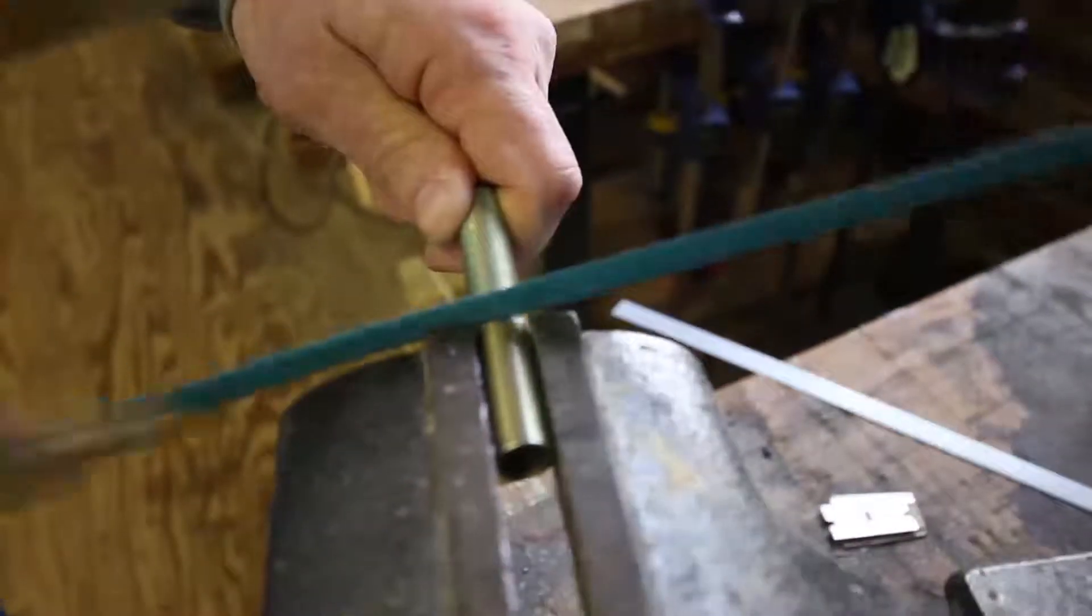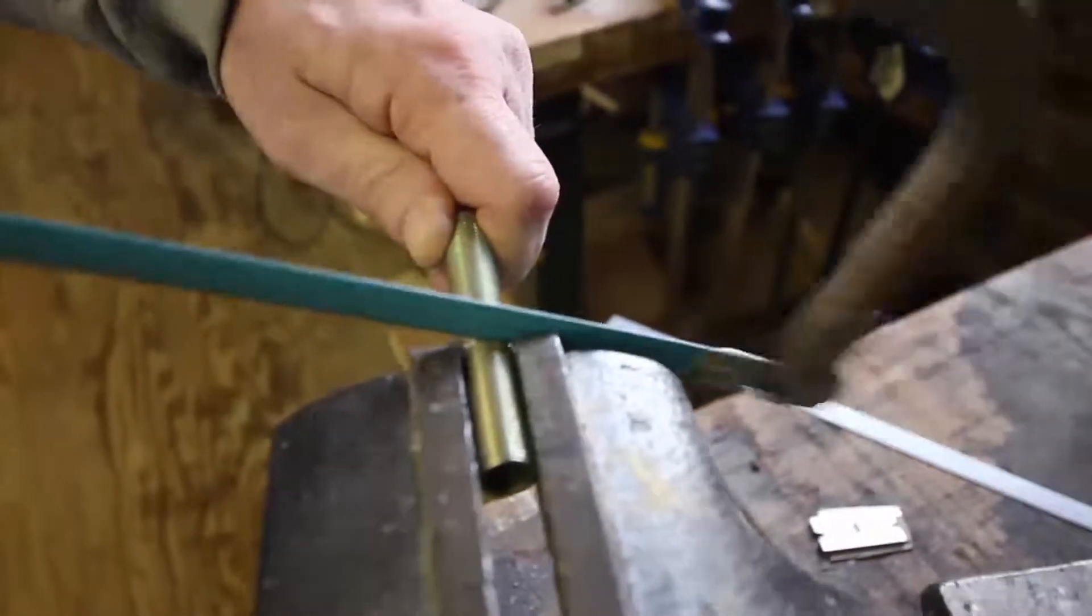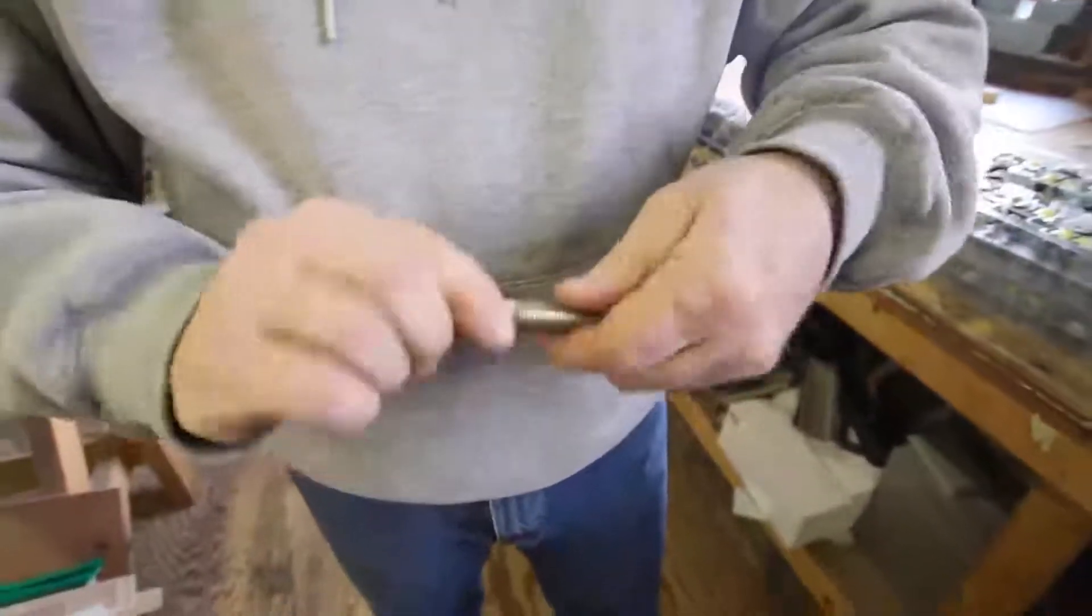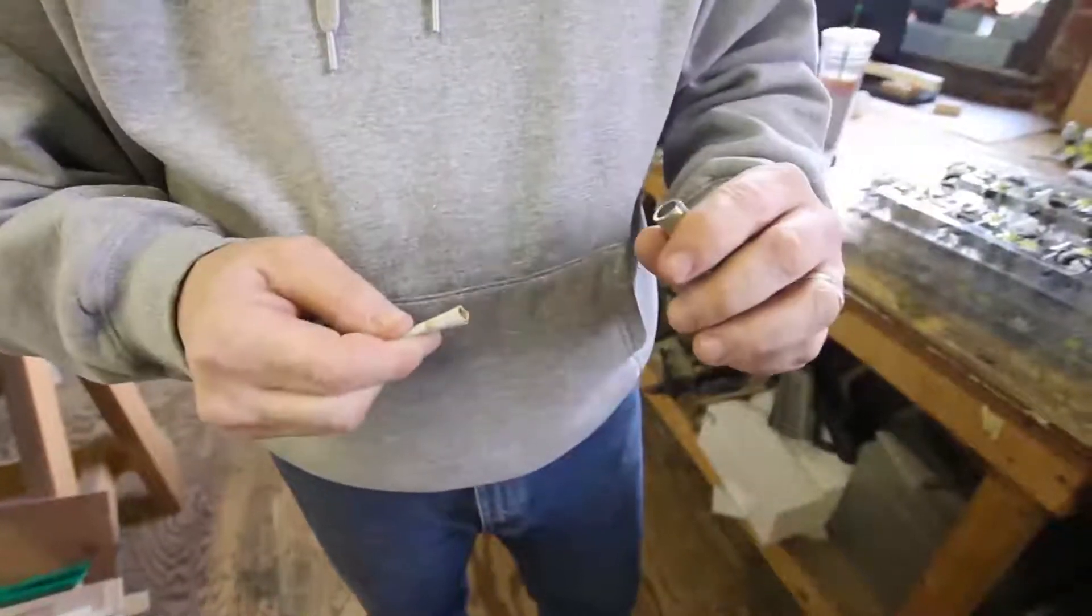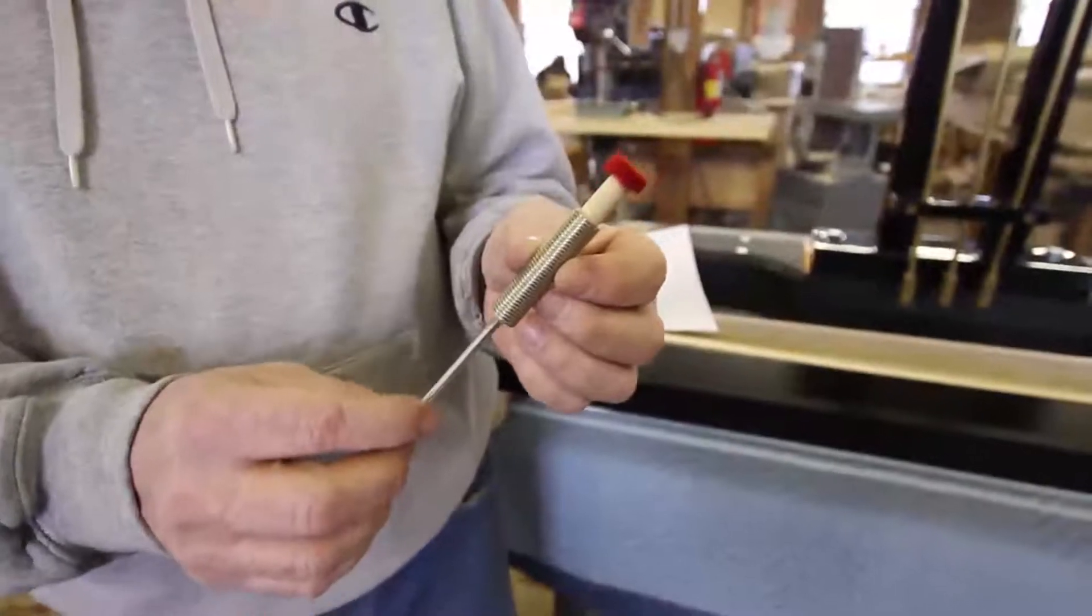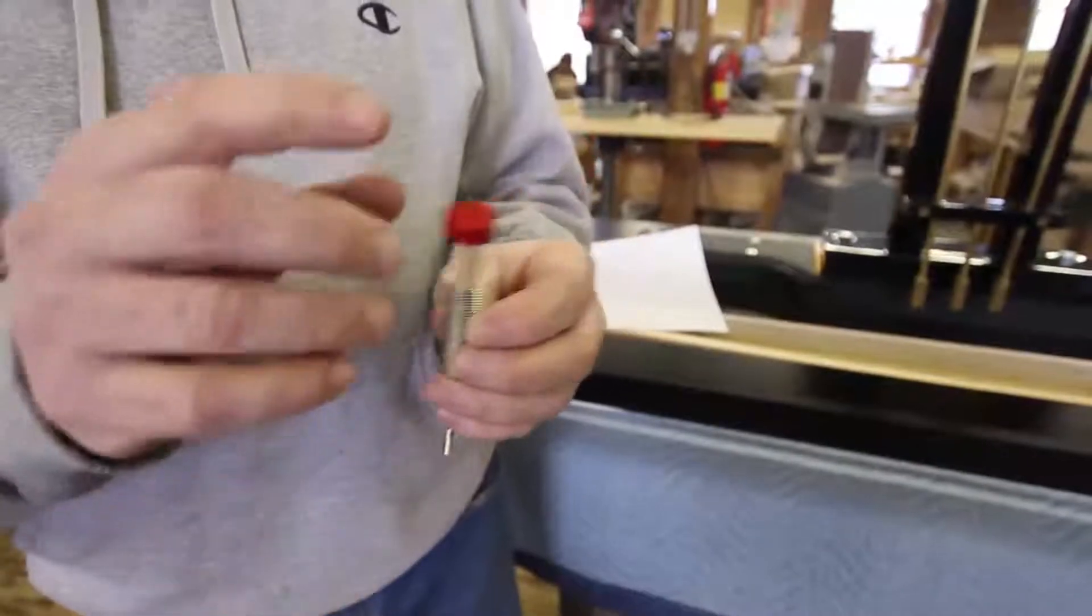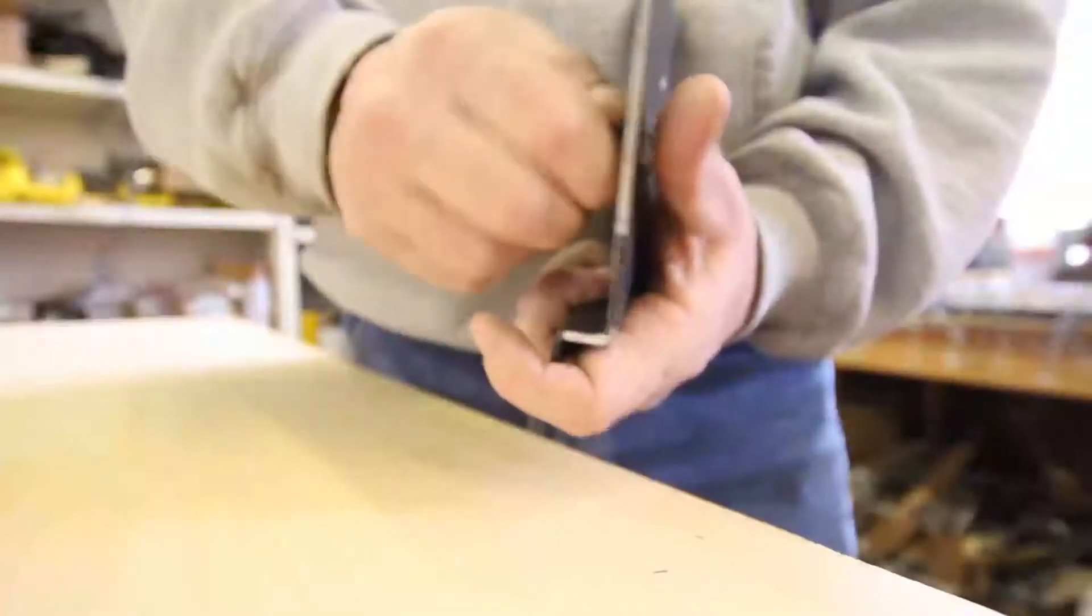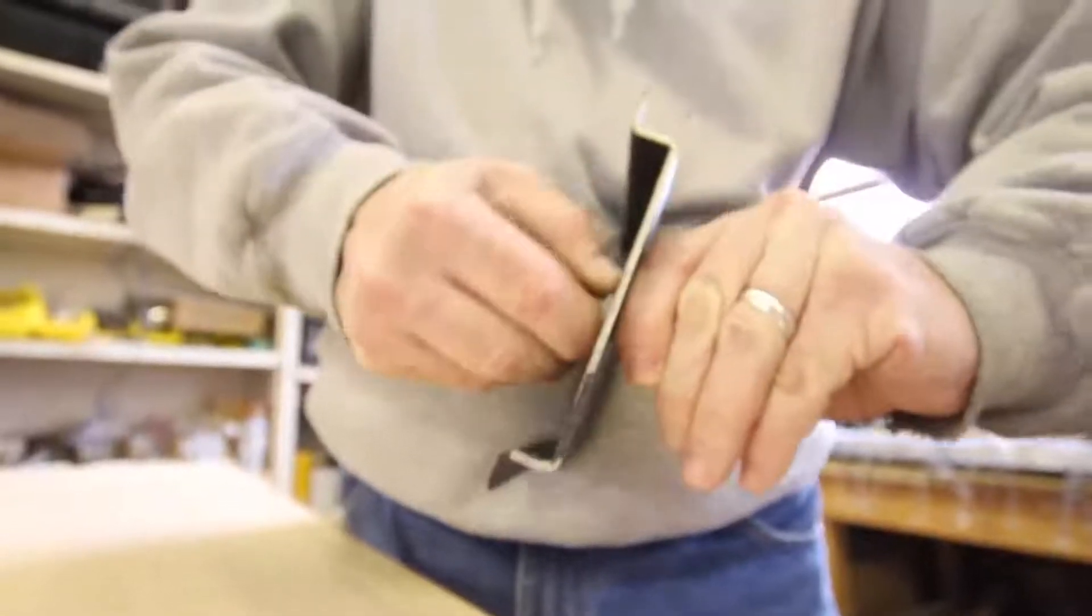Cut the threaded rod to two inches in length and clean off the burrs. Roll up a piece of 220 sandpaper and smooth any burrs on the inside of the threaded rod. Test the three-eighths inch dowel for fit after cleaning off the inside of the threaded rod. Install the threaded rod into the one inch punched hole and secure with two lock nuts.